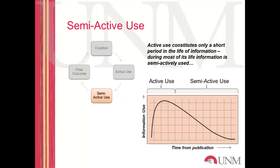Most academic articles, to the chagrin of their authors, immediately move into a semi-active use phase where they really don't have that much value after their initial publication. We find that in most types of information produced by any type of organization, information objects have a very high active value when first created, and then almost immediately move into a semi-active use phase.